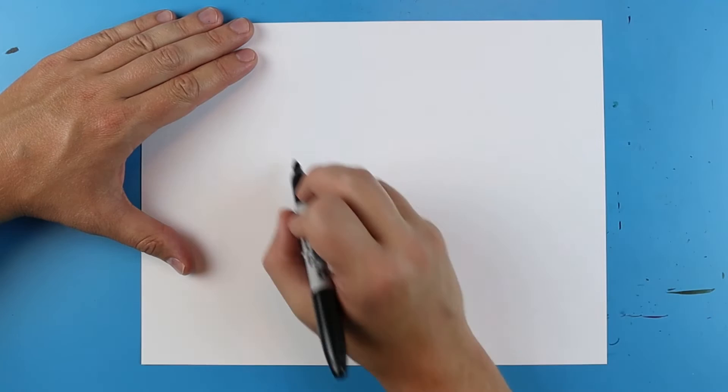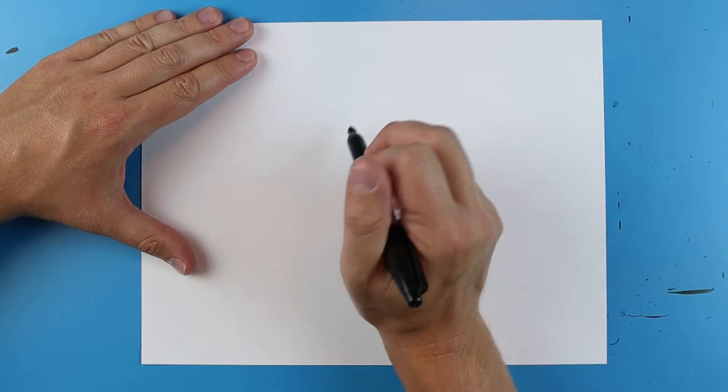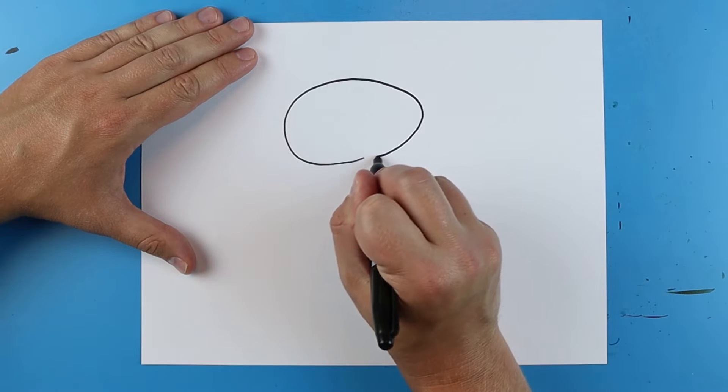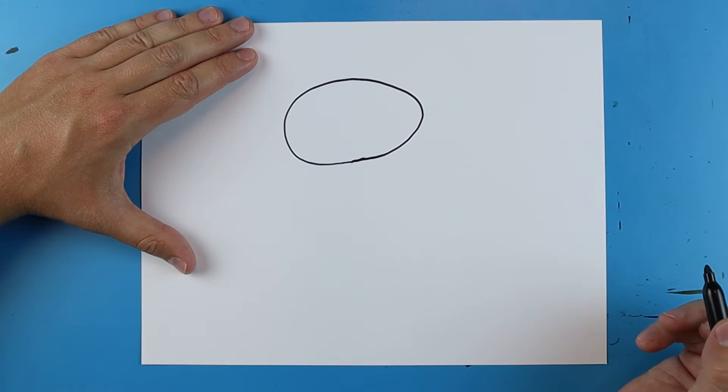To begin with this, you want to begin with a nice oval. So just start somewhere on your paper and make a nice oval shape. It doesn't have to be perfect.